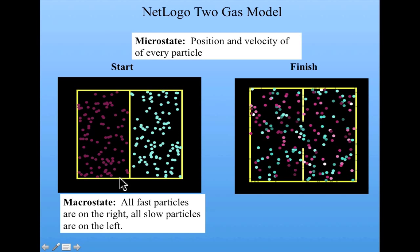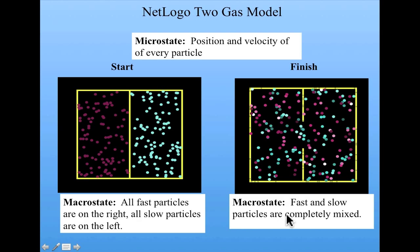Here we have one macrostate. All fast particles are on the right and all slow particles are on the left. And over here we have another kind of macrostate. Fast and slow particles are completely mixed.